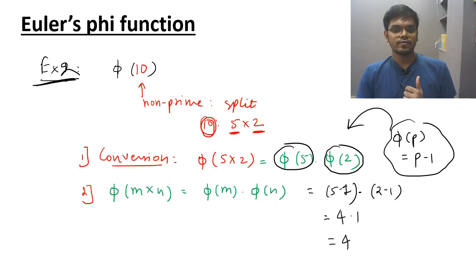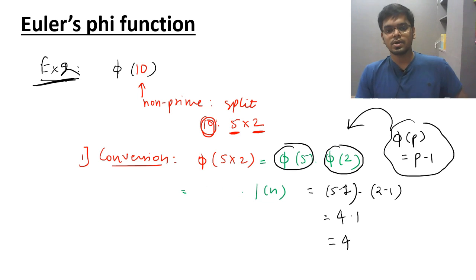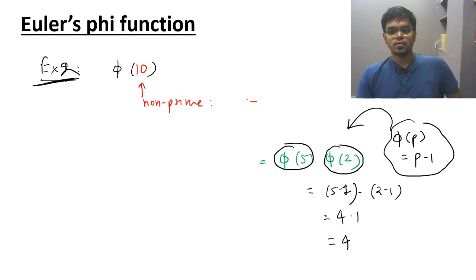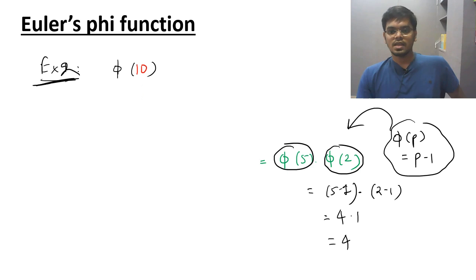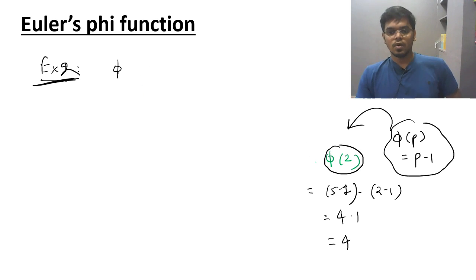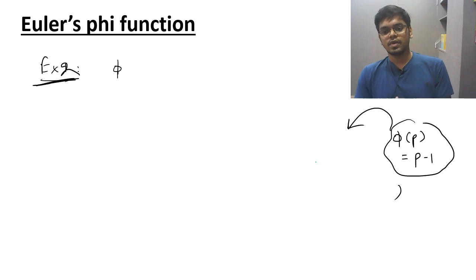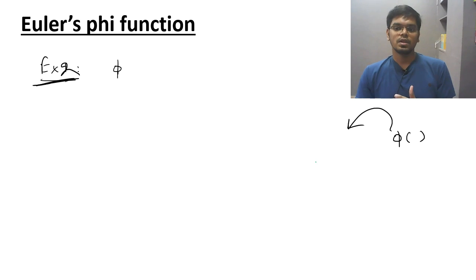Up till now we have studied two properties of Euler's function. The first property is phi of p — a prime number — equals p minus 1. And if you have a non-prime number, you can write it as a product of prime numbers. If you have phi of m times n, you can split it as phi of m times phi of n.